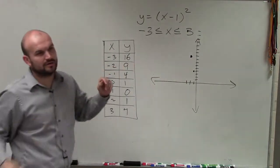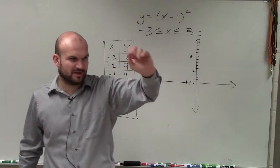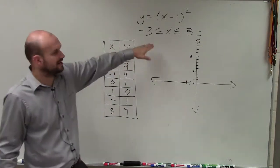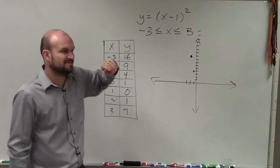Do notice though, that your tables over there are only going to go from negative 2 to 2. It's not going to be this broad, so you won't have as many points.